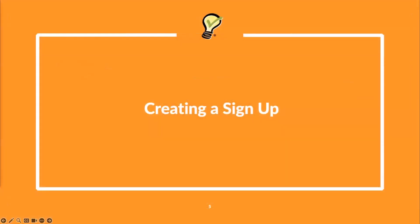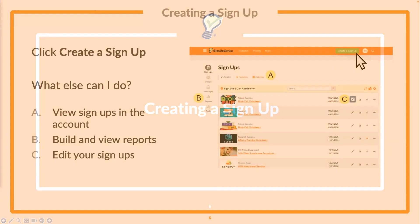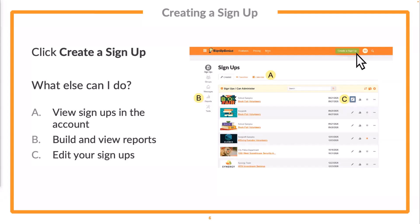We're going to get started on how to create a sign-up. Whether you're a gold, platinum, or enterprise subscriber, we all follow the same three simple steps to creating a sign-up. When you first log in, the first thing you'll see is your sign-ups page — I like to call this home base. Whenever you're working on a sign-up or trying to find a tool, if you get back to home base you can usually find what you're looking for. Depending on your permissions, you may see a list of sign-ups in the sign-ups I can administer section.